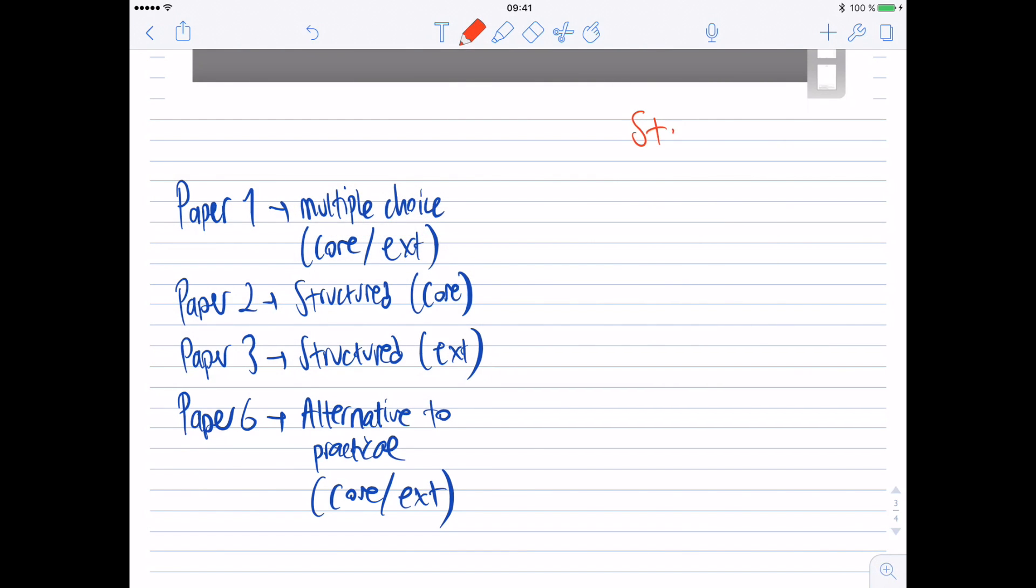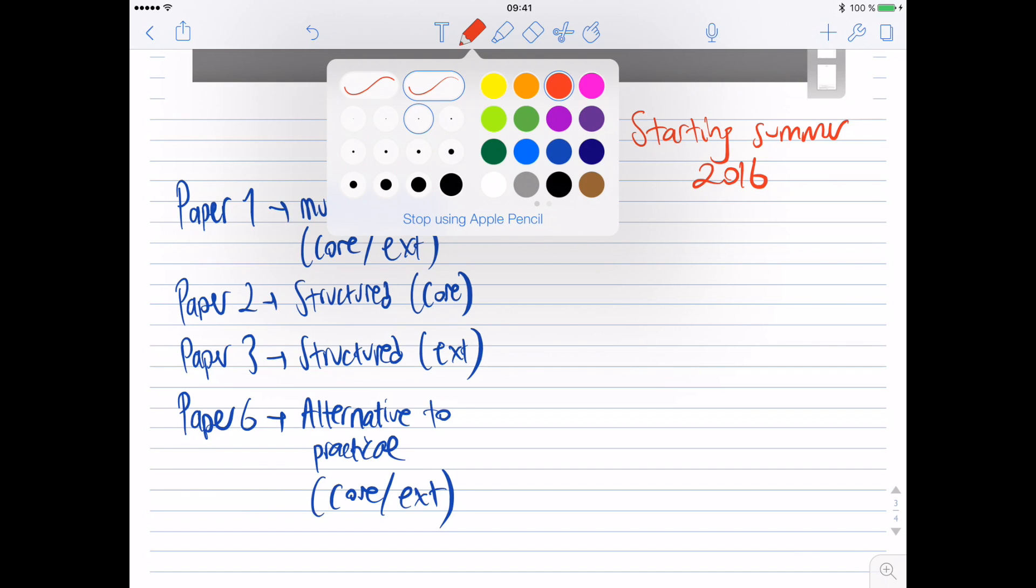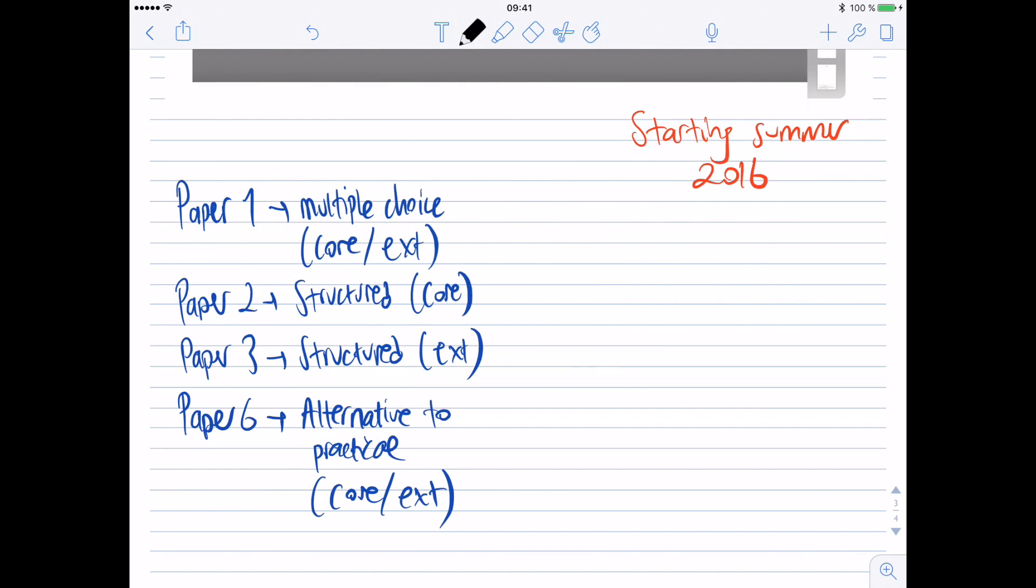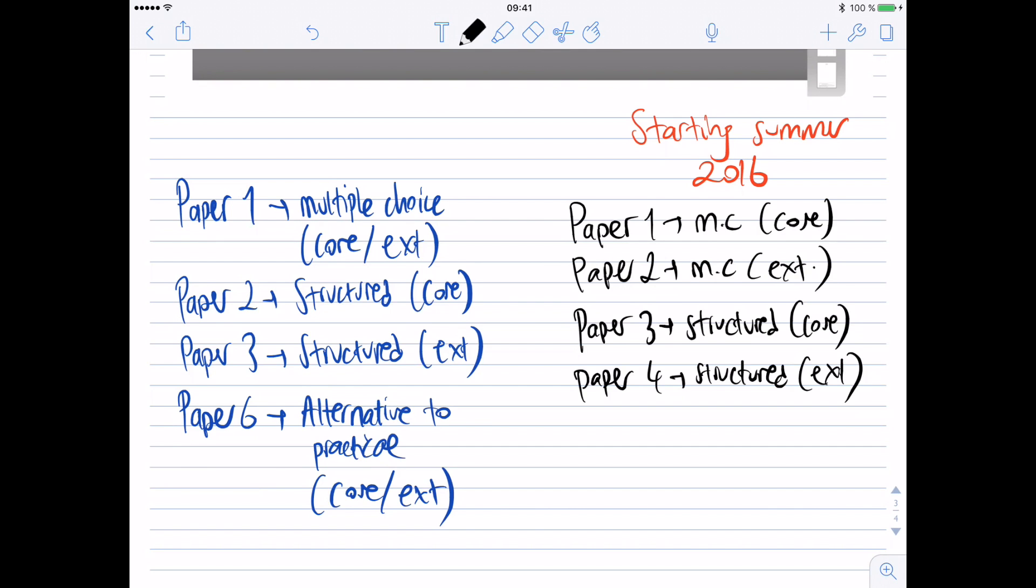Starting with summer 2016, CIE changed the syllabus components for the IGCSE science subjects. Basically, there's no more common multiple choice paper. They have separate multiple choice papers. The paper 1 is the multiple choice for core. And paper 2 is a multiple choice for extended. This basically shifts the number of components. Which makes paper 3 the structured paper for core. And paper 4 is the structured paper for extended.